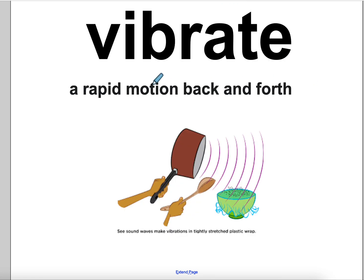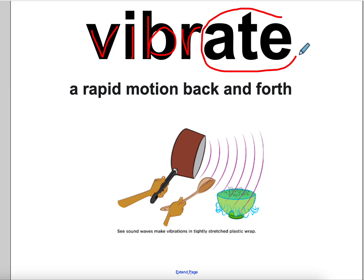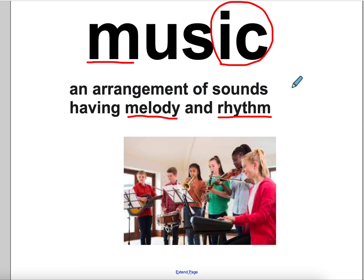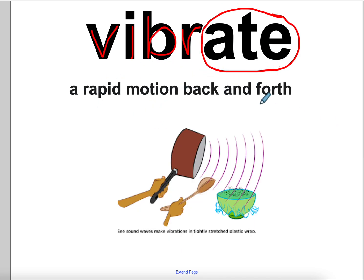The next word is vibrate. V-I-B-R-A-T-E. Vibrate means a rapid motion back and forth. When you play the guitar strings, when you play them, they vibrate. And that vibration is what creates the music, the melody. Vibrate is a rapid motion back and forth — you can see some vibrations here.